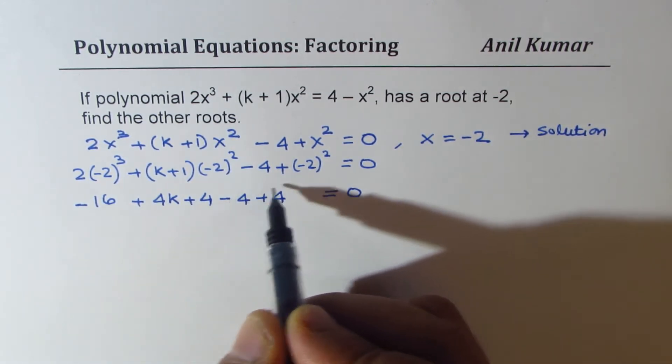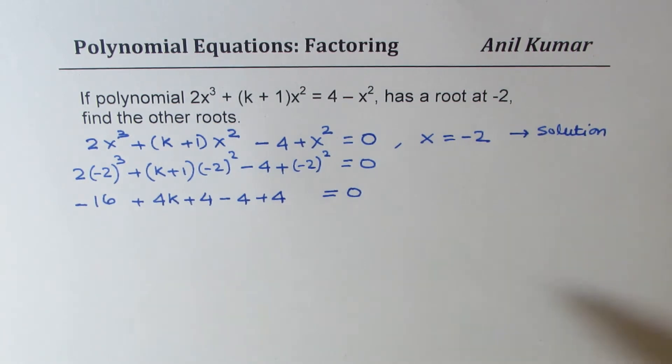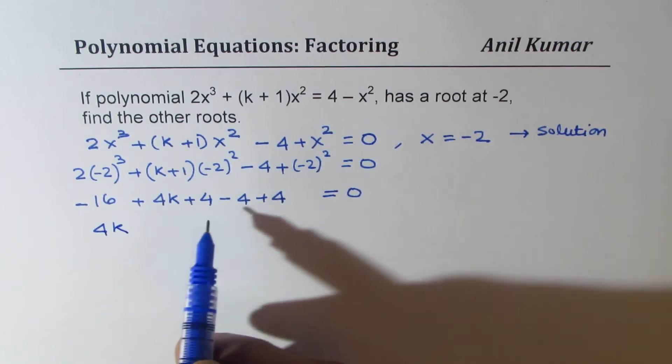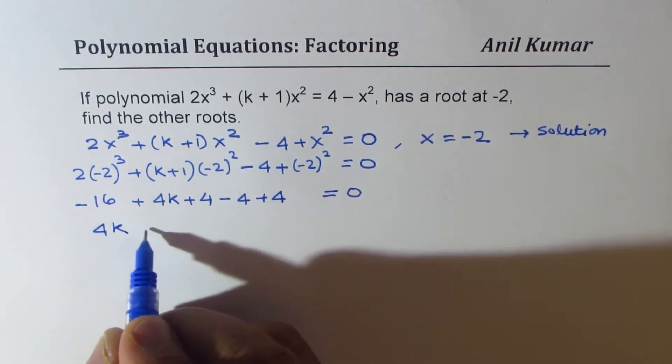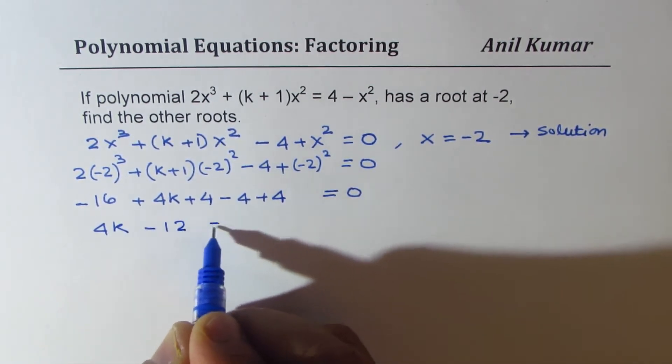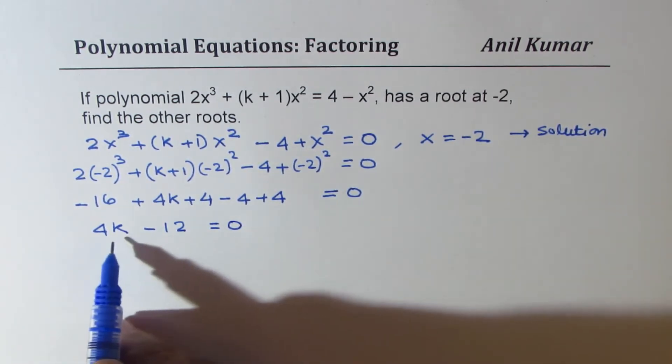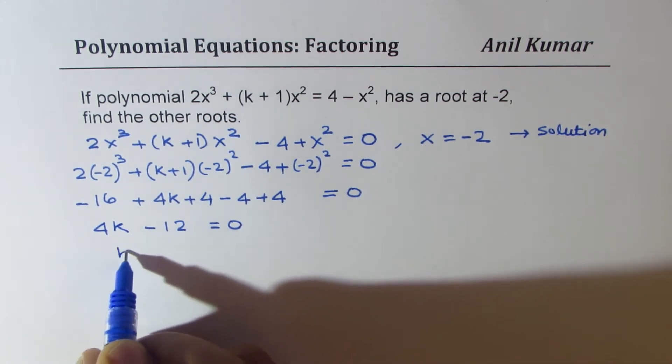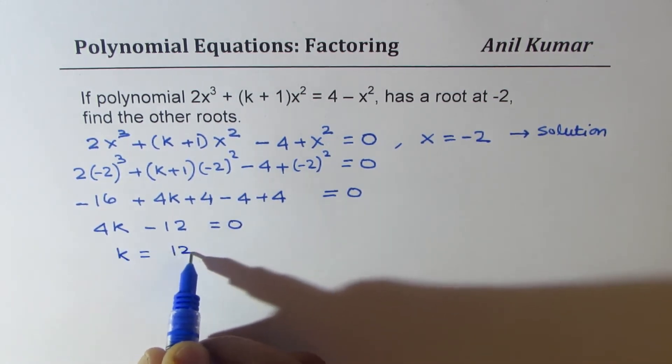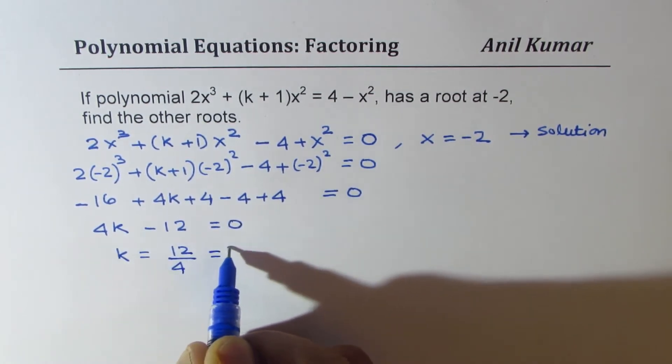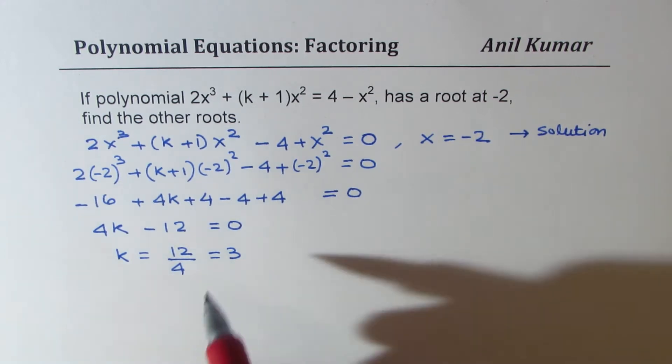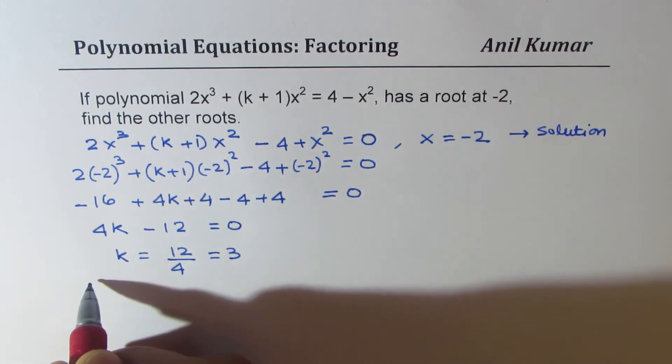So -4 and +4 cancels. So we get from here 4k. Now we could cancel this. So 4k - 12 = 0. So that gives you the value of k. So that gives you k equals to 12 divided by 4, which is 3. I'm saving this space to find the other roots. So we get the value of k, which is equal to 3.